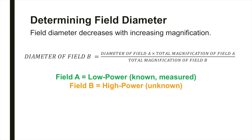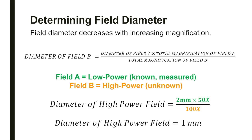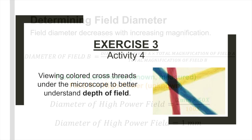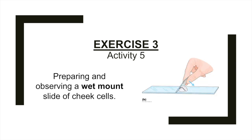For example, if the diameter of the low power field (field A) is 2 millimeters and the total magnification is 50, the diameter of the high power field (field B) with a total magnification of 100 would be 1 millimeter. In exercise three, activity four, you'll be viewing colored threads under the microscope to better understand depth of field. In exercise three, activity five, you'll be preparing and observing a wet mount of cheek cells.